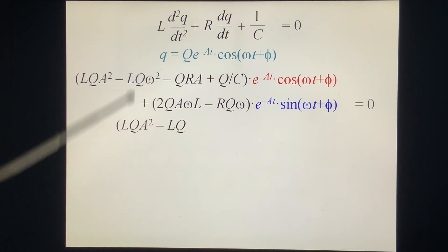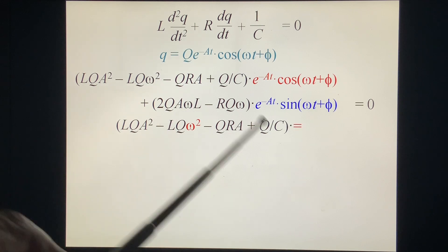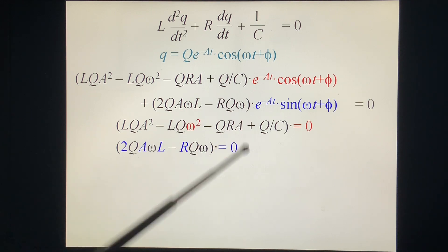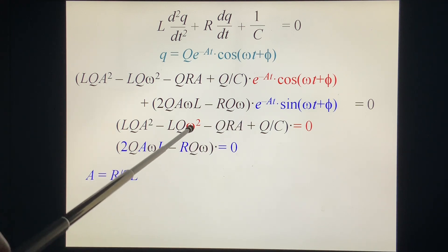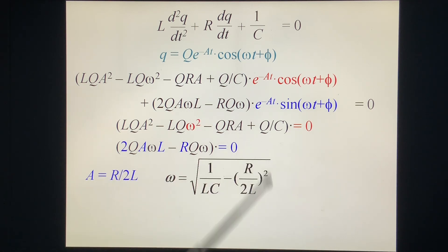So we get LQa² - LQω² - QRa + Q/C = 0, and 2QAωL - RQω = 0. In this one, Qω cancel out, we get a equals R over 2L. We put a equal to R/2L, we find ω. Omega equals square root of 1 over LC minus (R/2L)². Now we get the answer because we have a, we have ω. And this one is originally ω², you have one more term because you have R. Without R, without this term, we get ω₀.